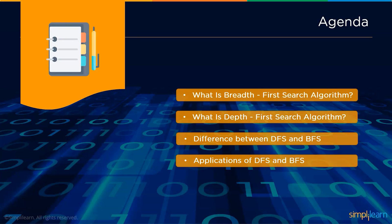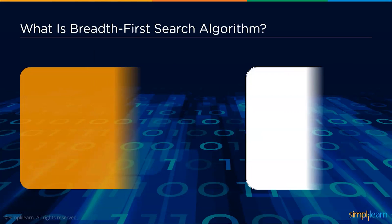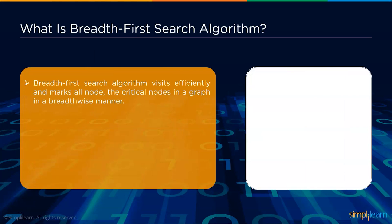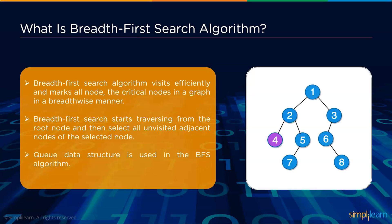First, we will discuss breadth-first search algorithm. BFS visits every node efficiently and marks all the nodes adjacent to that particular node. The critical nodes in the graph are visited in a breadth-wise manner. BFS starts traversing from the root node and then selects all the unvisited adjacent nodes. A queue data structure is used to implement BFS algorithm.